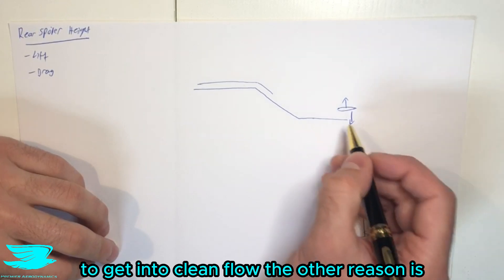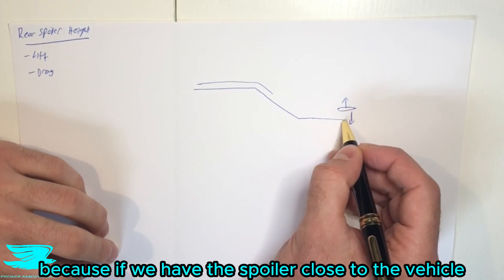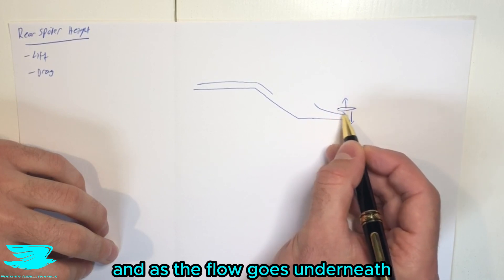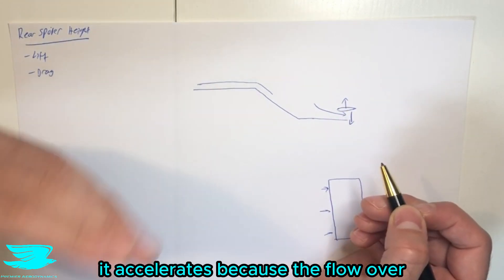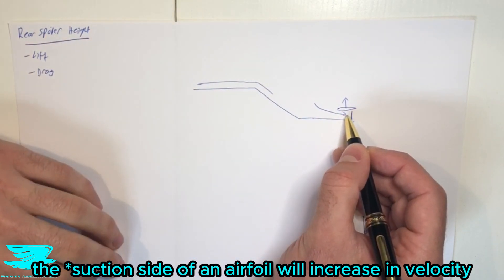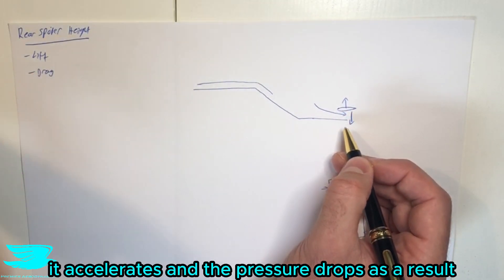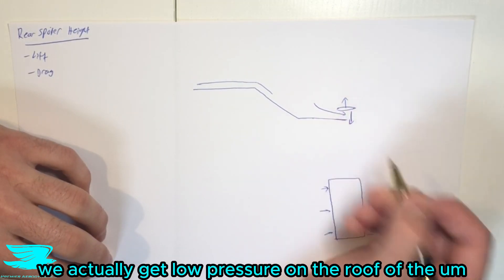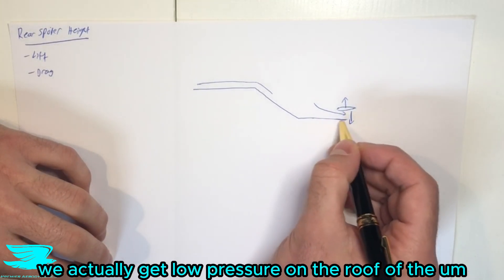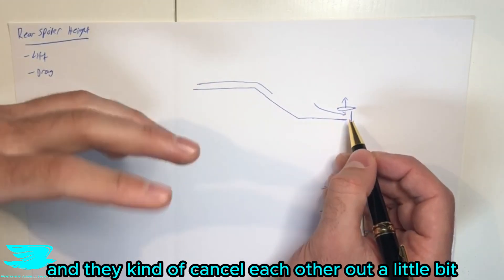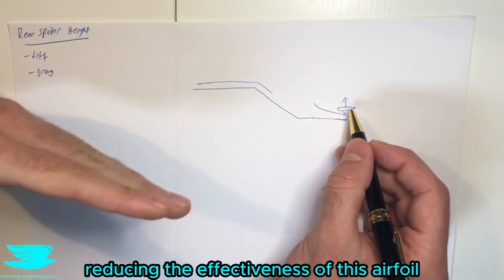The other reason is because if we have the spoiler close to the vehicle, now we have the flow coming underneath, and as the flow goes underneath, it accelerates because the flow over the suction side of the airfoil will increase in velocity, it accelerates, and the pressure drops. As a result, we actually get low pressure on this roof of the boot as well. So we get low pressure here, low pressure here, and they kind of cancel out a little bit, reducing the effectiveness of this airfoil.